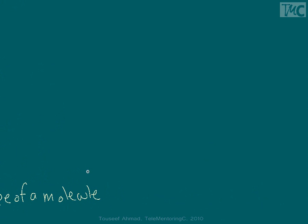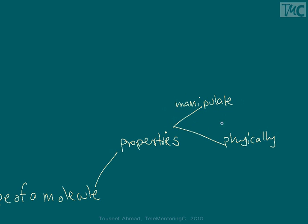Shape of a molecule. And if you know the shape of a molecule, you would know its properties. And now, and you know what? It even gets better. Because once you know its properties, you know to manipulate it. You know how to manipulate it physically. Manipulate physically and chemically.